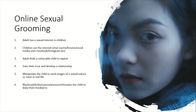To keep the child stuck in that cycle of returning to their groomer, the groomer can use blackmail, bribery, coercion, pressure and threats. For example, they may say they have images and will send them to the child's friends and family — having already found out names, the family, the school — making it very easy for the child to believe this will happen unless they continue doing what the groomer wants.